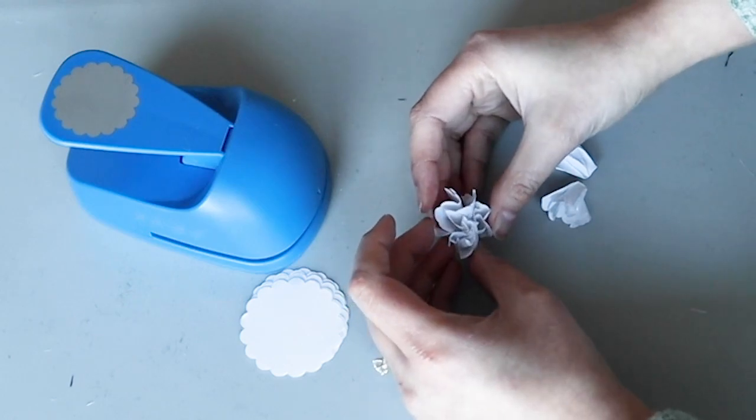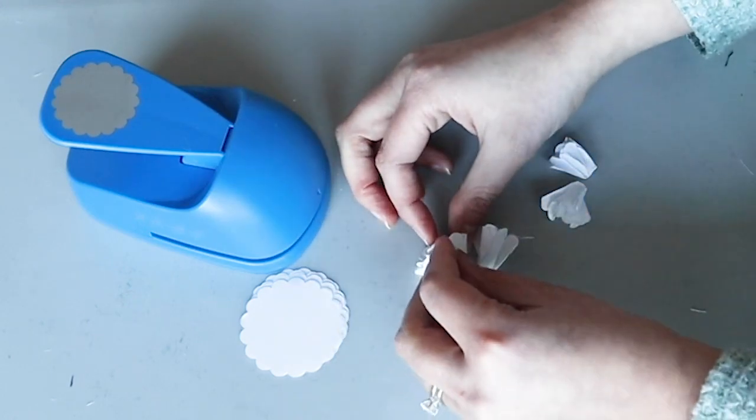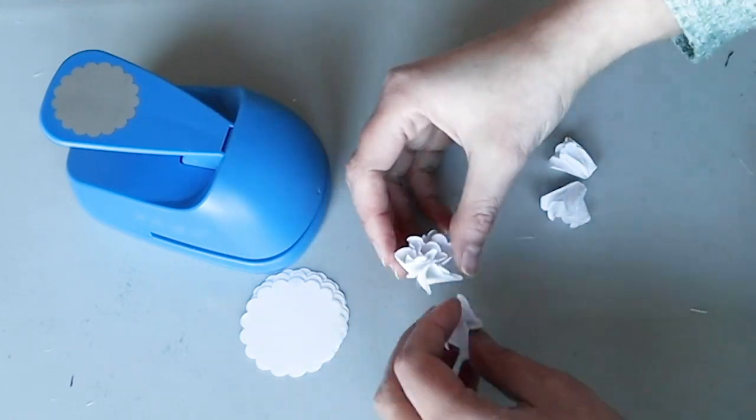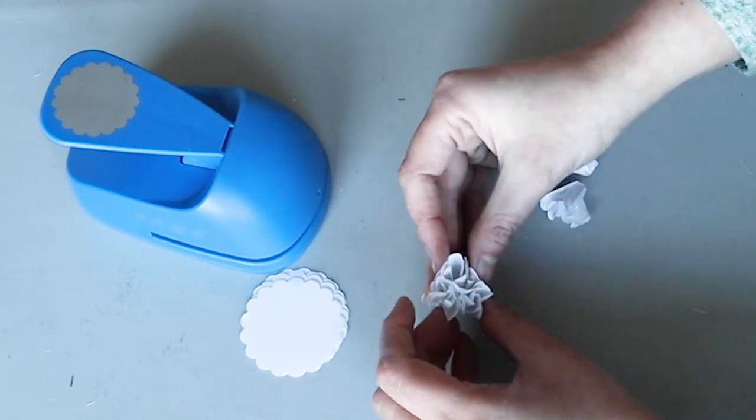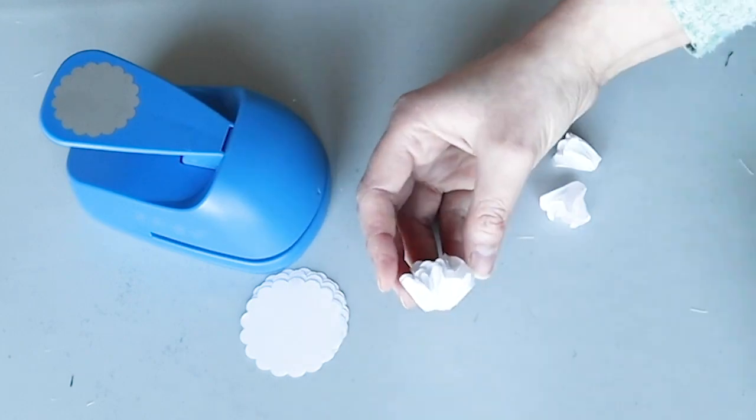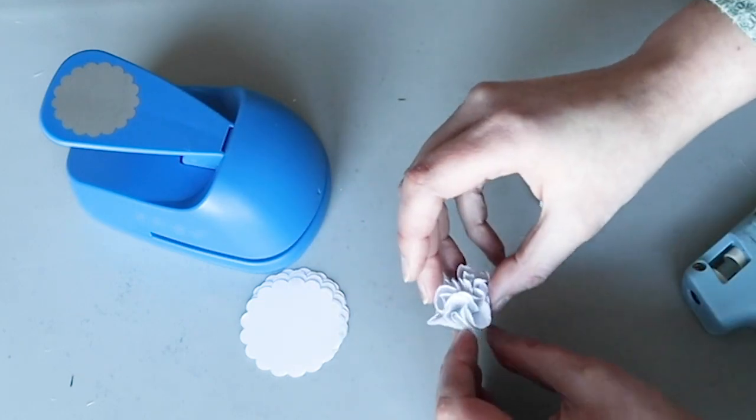I glued these together and adjusted them until I was happy with the shape. Then I hot glued a few sprigs of greenery on either side.